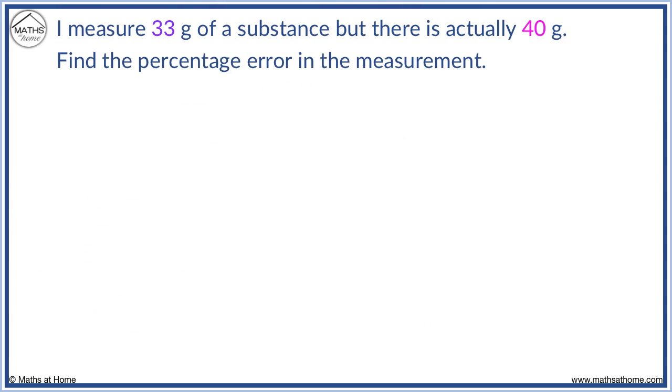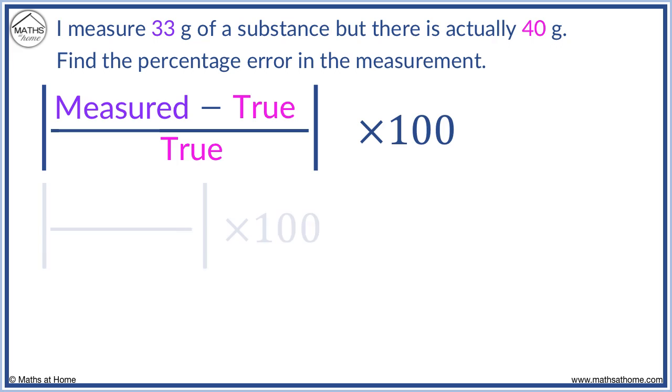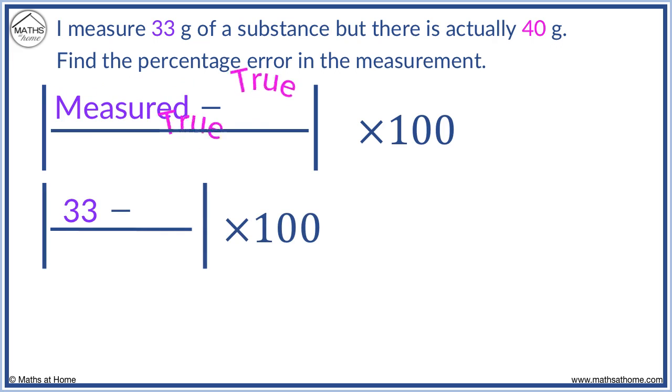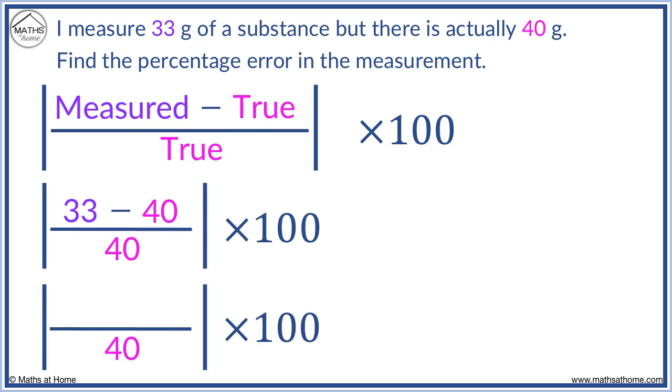Here is another example in which the absolute value is used to remove the negative. Here the measured value is 33 and the true value is 40. 33 minus 40 equals minus 7.